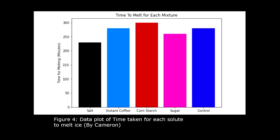In our experiment, we found that salt was the most effective solute for decreasing the melting time of water. We found that instant coffee had virtually no effect, sugar had a small effect, and cornstarch in fact increased the melting time for the water. This increase in the melting time of water upon the addition of cornstarch goes against the theory that adding any solute to a solution will reduce the freezing point of the solution.